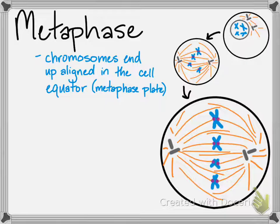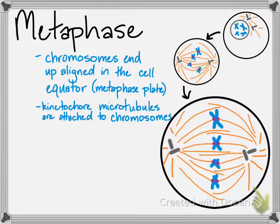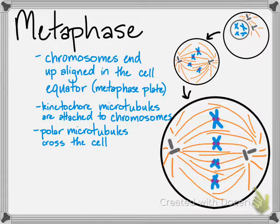At the end of that tug-of-war process, all the chromosomes end up aligned at the center — the equator of the cell — which is also called the metaphase plate. This is a major checkpoint where the cell checks that every kinetochore has at least one microtubule connected to it, so that sister chromatids can be pulled apart. There are also polar microtubules that cross each other in the cell, distinct from the kinetochore microtubules that connect to chromosomes.